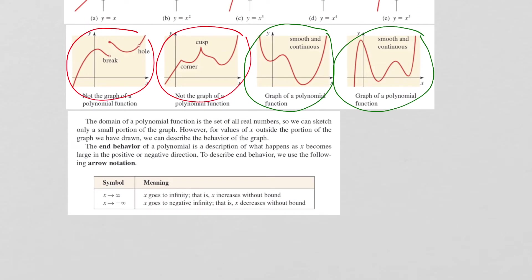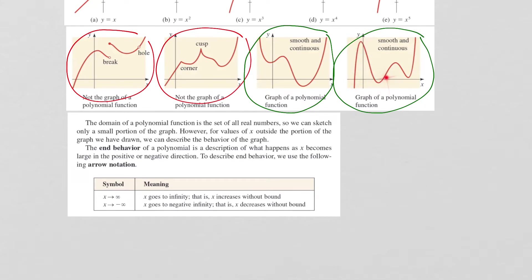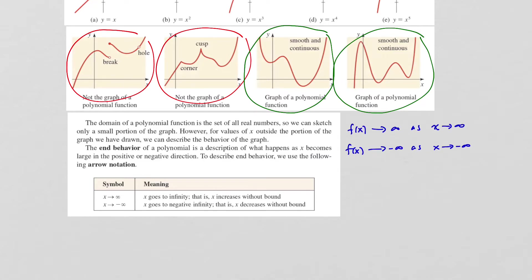Looking at a graph, as x gets larger the graph goes up unbounded — so as x goes to infinity, f(x) also goes to infinity. On the left-hand side, as x goes to negative infinity, the graph also goes to negative infinity. So we write: f(x) approaches positive infinity as x approaches positive infinity, and f(x) goes to negative infinity as x goes to negative infinity. Contrasting with another graph, as x goes to positive infinity the graph goes to positive infinity, but as x goes to negative infinity the graph also goes to positive infinity — the graph goes up on both sides.